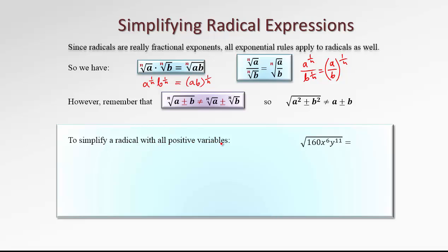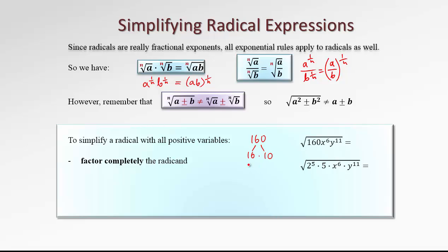How to simplify a radical with positive variables? The assumption of positive variables is just for the sake of not worrying about applying absolute value in the end. So let's assume that all variables are positive and concentrate on simplifying radicals. If we want to simplify the square root of 160 x to the 6 and y to the 11, first we may want to think of factoring the radicand completely. To factor 160, we can use a factor tree. We could split 160 into 16 and 10; 16 is 2 to the 4, and 10 can be split into 2 times 5. So altogether we have 2 to the 5 times 5. And x to the 6 and y to the 11 are already in factored form.